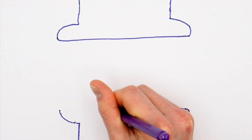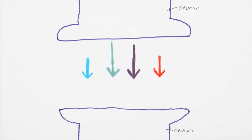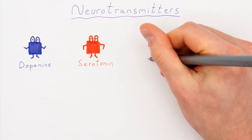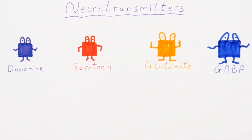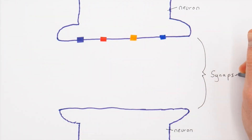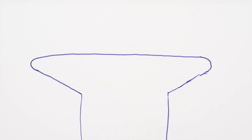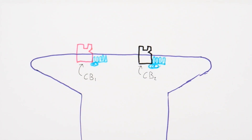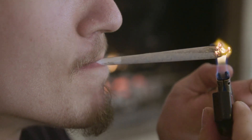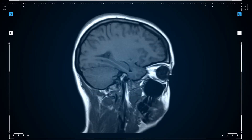Your brain is made up of cells called neurons that constantly send signals to other neurons. The signals are carried by a team of tiny molecules called neurotransmitters that move across a space called a synapse and bind to receptors on the next neuron. Two of these receptors, called CB1 and CB2, are really important for understanding how weed affects your brain.